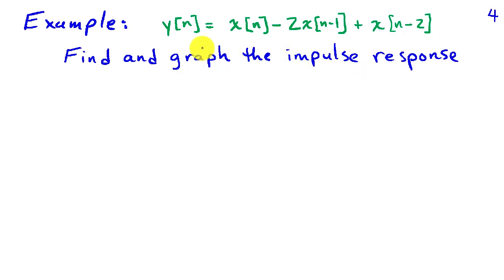Suppose we're given a system with output y of n expressed in terms of the input x of n as x of n minus 2x of n minus 1, plus x of n minus 2. And our goal is to find and graph the impulse response.